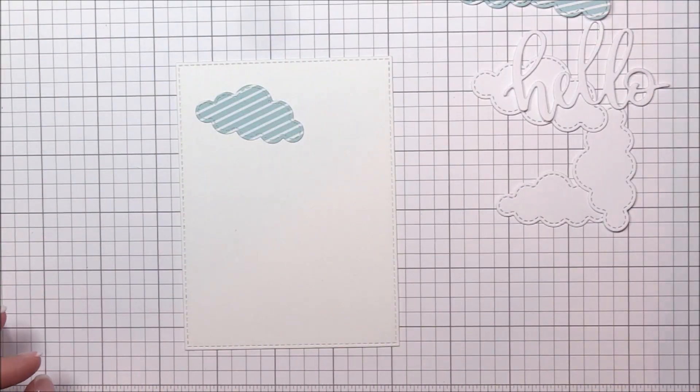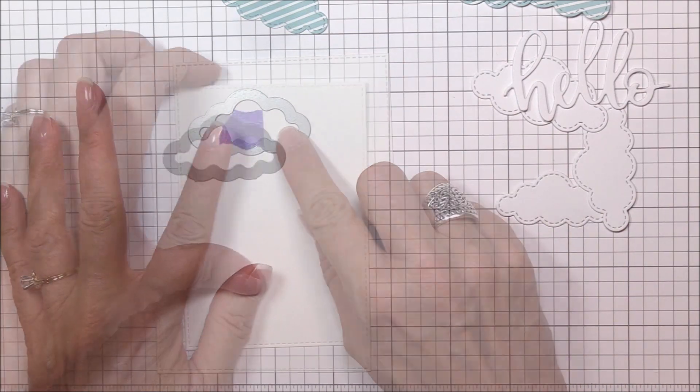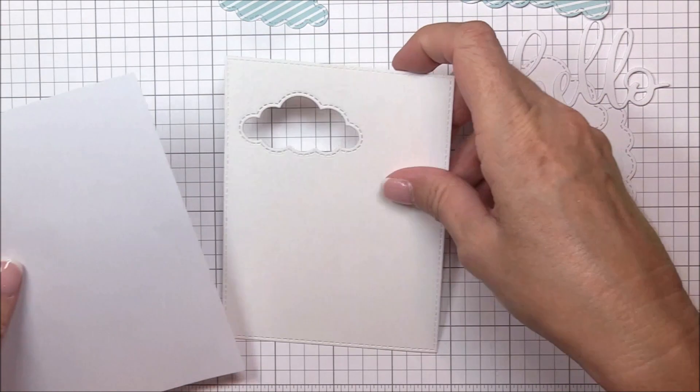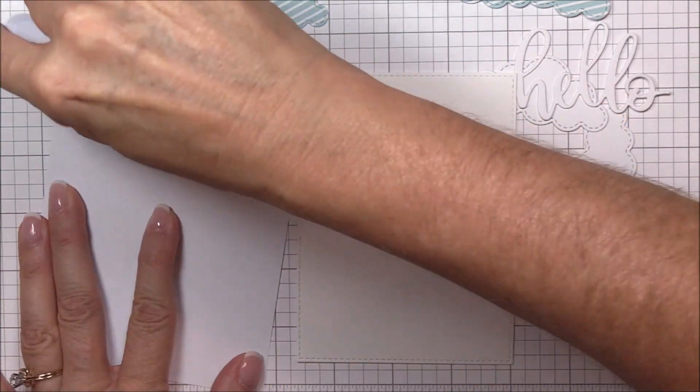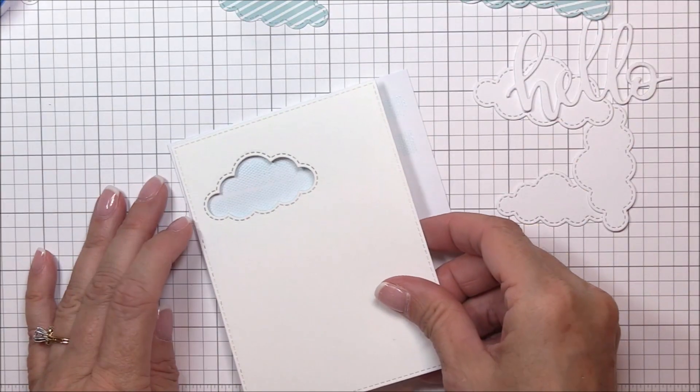To start off, I die cut all of the images for my design from four different pattern papers. All the products I'm using will be listed below in the description box. I initially thought I wanted to back the pattern paper die cuts with heavier cardstock, but I changed my mind, so just ignore those white die cuts in the upper right hand corner.